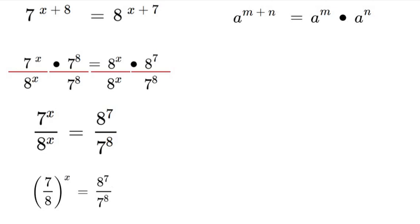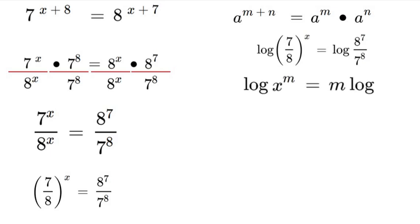Now that is great because now we can go ahead and use the log function to solve for the exponent. So let's multiply both sides by log. Now we are going to use a logarithm property. That property is if you have log of x to power m you can move that power to the front like m log x. So we'll have x log 7 over 8 equals log 8^7 over 7^8.